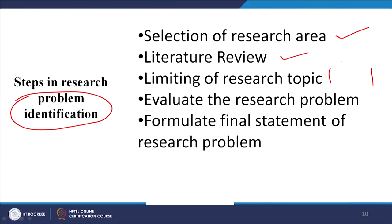Then you read the literature — you follow several recent literatures, what are the current events and researches happening in this area. Once you do this review, you limit to a certain topic. Suppose you have taken tourism — in tourism you limit to several different parts, and then you say maybe I am interested in this area because I see it as more interesting, there is more literature available, and maybe I can get the data easily. Finally you evaluate the research problem and formulate the statement.